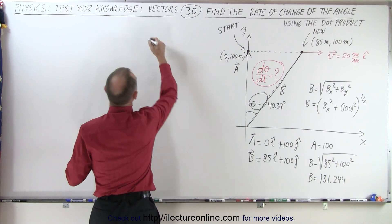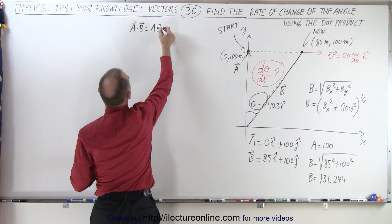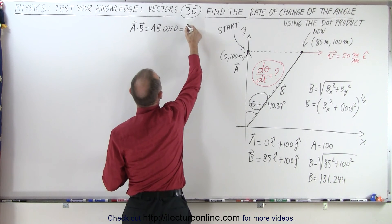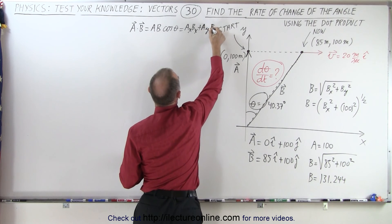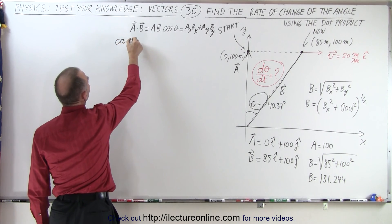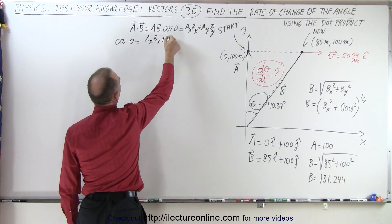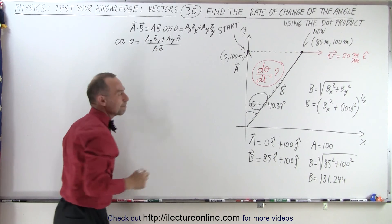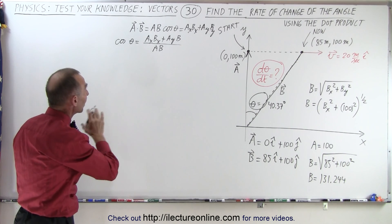So what we can do here is we can say that A dot B is equal to the magnitude of A times the magnitude of B times the cosine of the angle between them, and we know that this is also equal to AxBx plus AyBy. And so that means that we can write the cosine of the angle theta as being equal to AxBx plus AyBy divided by the magnitude of A times the magnitude of B. Now we're going to take the derivative of both sides with respect to time.